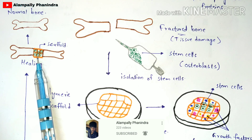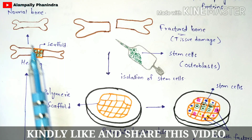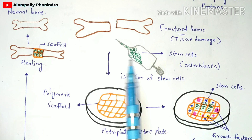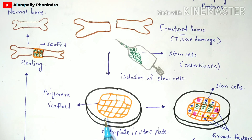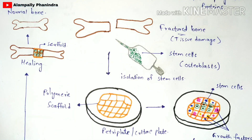Within 20 to 30 days, the fractured bone will be converted back into a normal bone. This is how tissue healing and repairing occurs using the tissue engineering process. This is the complete procedure conducted by doctors to convert a fractured bone back to normal using tissue engineering.